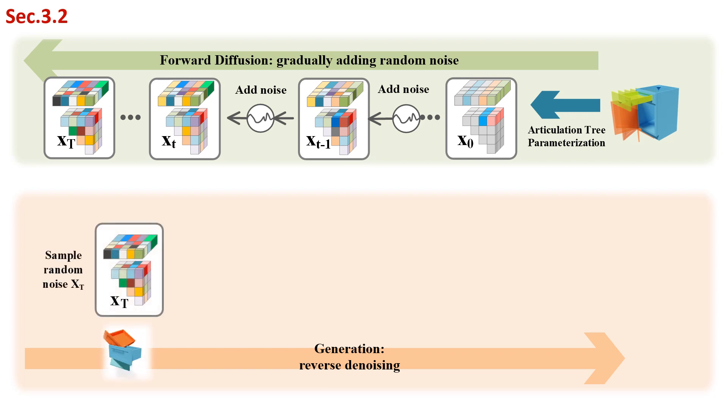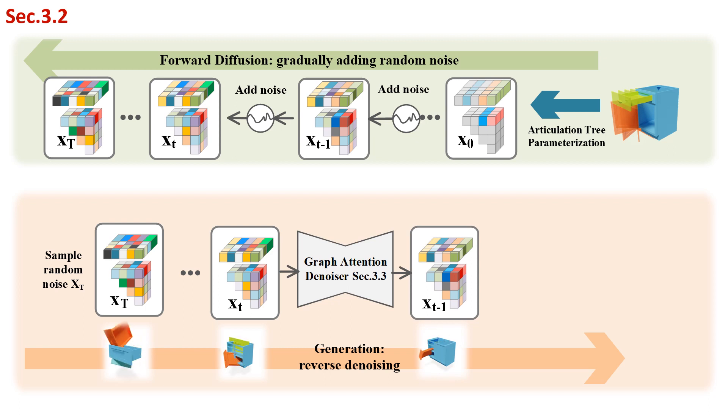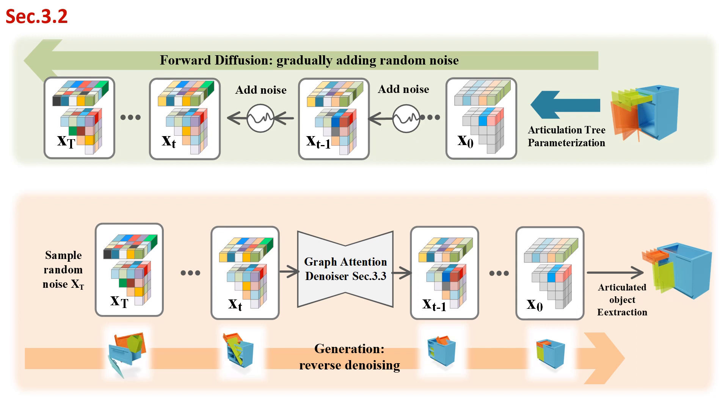Starting from a random graph, a graph attention network iteratively removes the noise and finally predicts a clean articulation graph. Finally, we apply post-processing to extract the articulated object model from the graph, which includes finding the tree structure via a minimum spanning tree algorithm, joint axis extraction, and part shape reconstruction or retrieval. More details are in section 3.2.